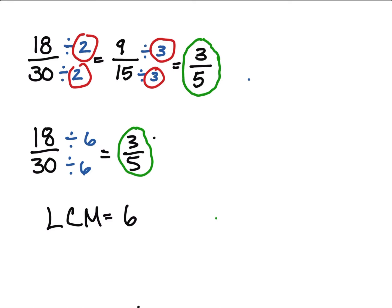So 6 is the least common multiple for 18 and 30. When you reduce, you get 3 over 5.